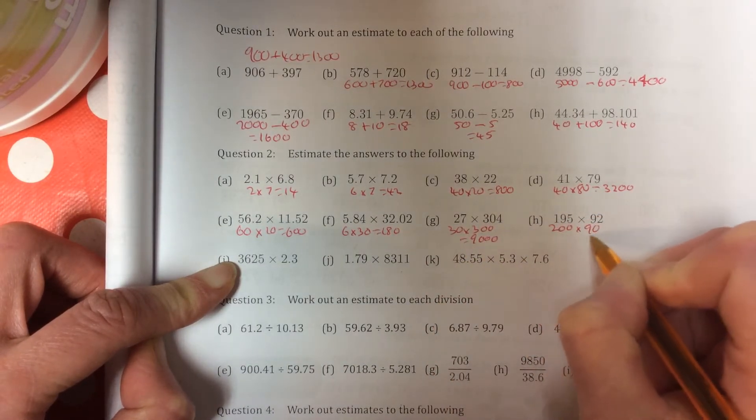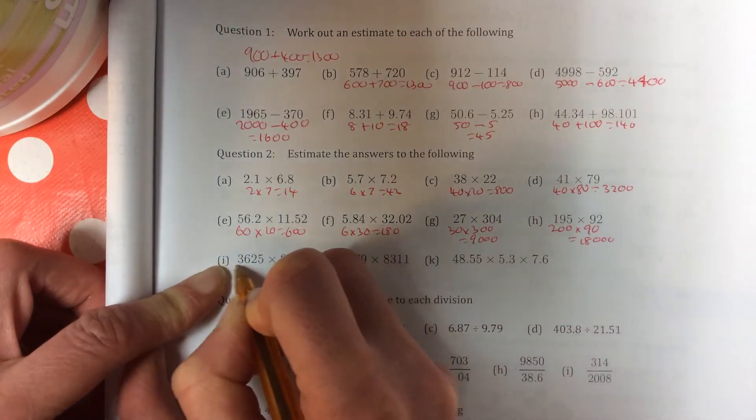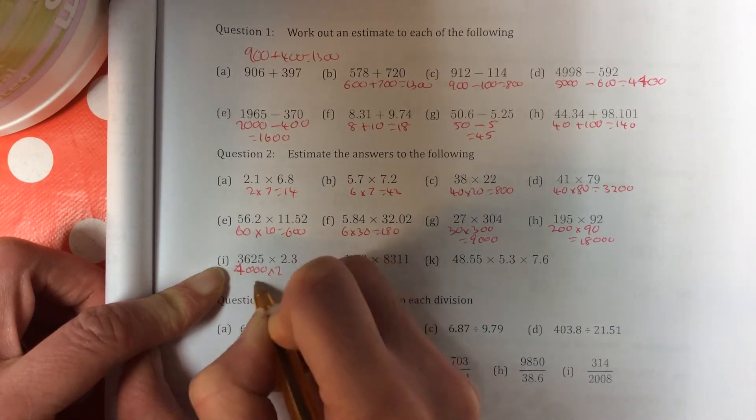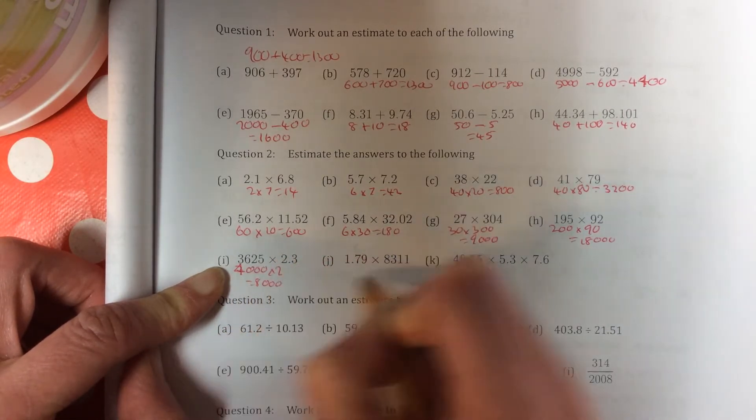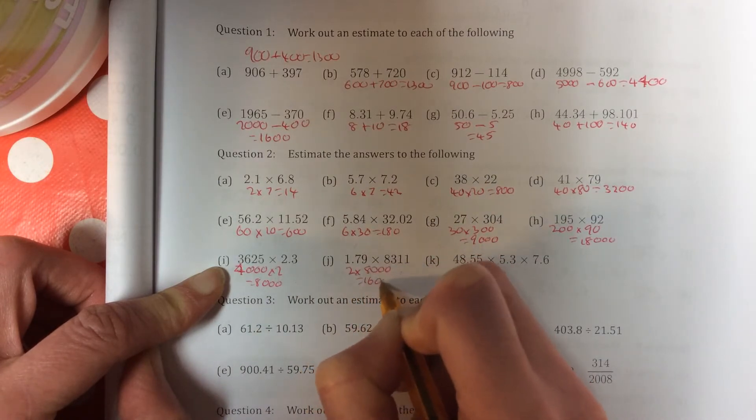30 times 300 is 9 with three zeros. 200 times 90, two nines, and then three noughts. I'm going to put in 3,000. 4,000 times 2 is 8,000. 2 times 8,000 is 16,000.